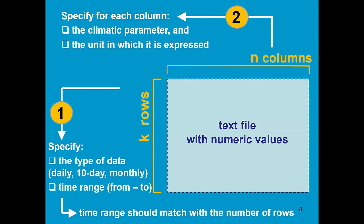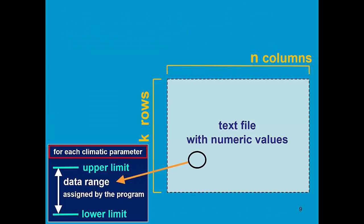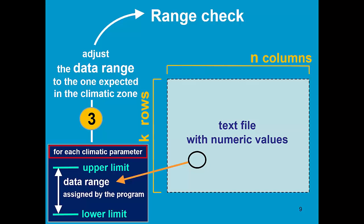Subsequently, we specify for each of the columns which is the climatic parameter and in what unit it is expressed. AquaCrop has assigned for each climatic parameter a data range — there is an upper limit and a lower limit. For example, for temperature data, the upper limit is by default 45 degrees and the lower limit minus 15 degrees. We can adjust the data range to the one which we expect in the climatic zone, and as such, we can run a range check.